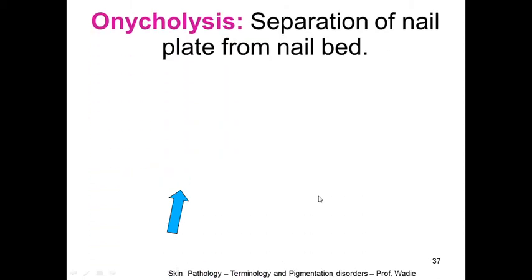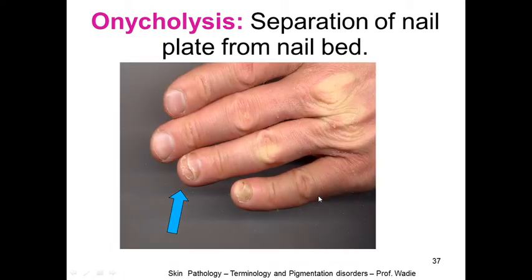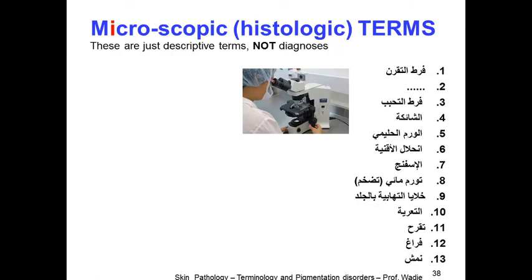Onycholysis means separation of the nail plate from the nail bed. Whenever you find the word 'onyco' it means nail, so onycholysis is the separation of the nail plate from the nail bed — as you can see in this picture.